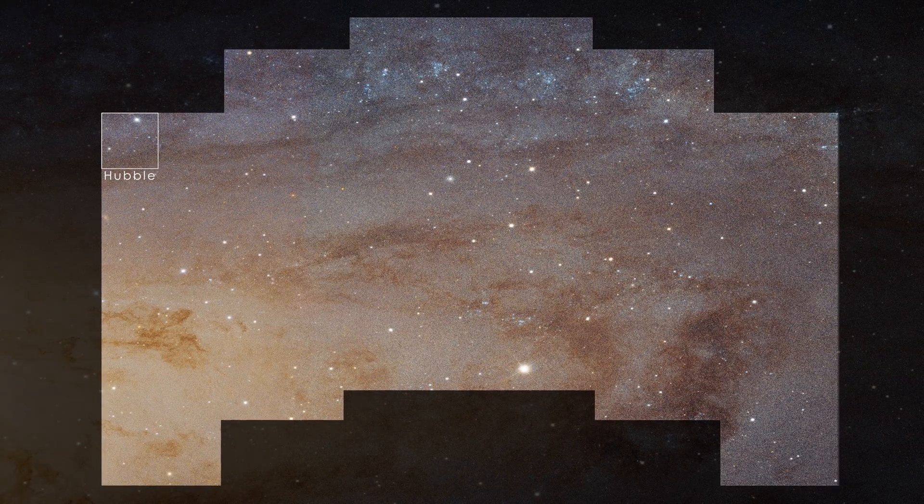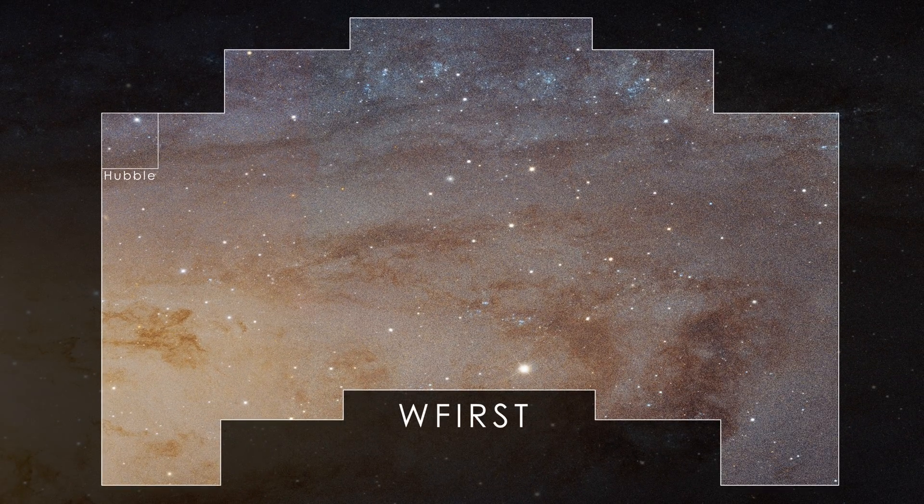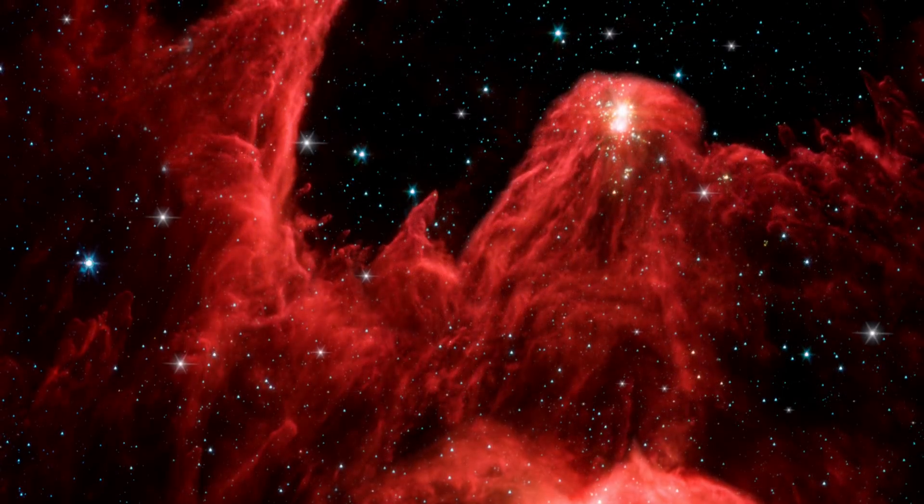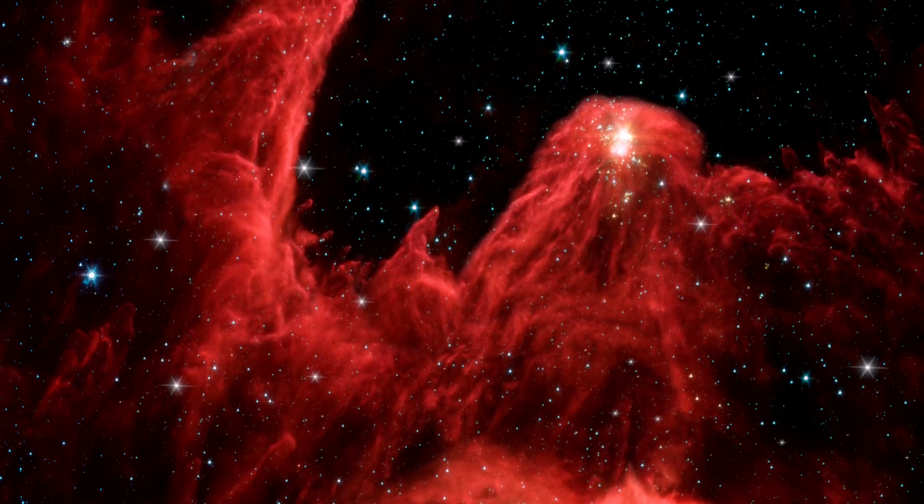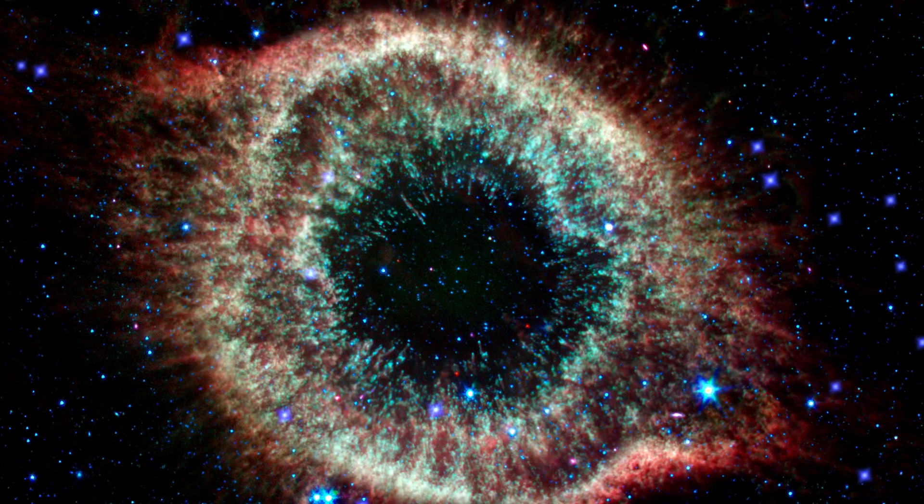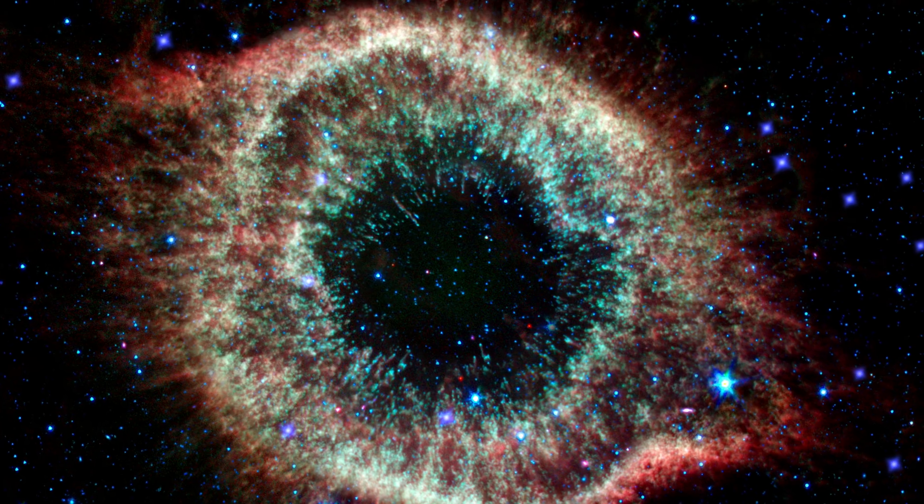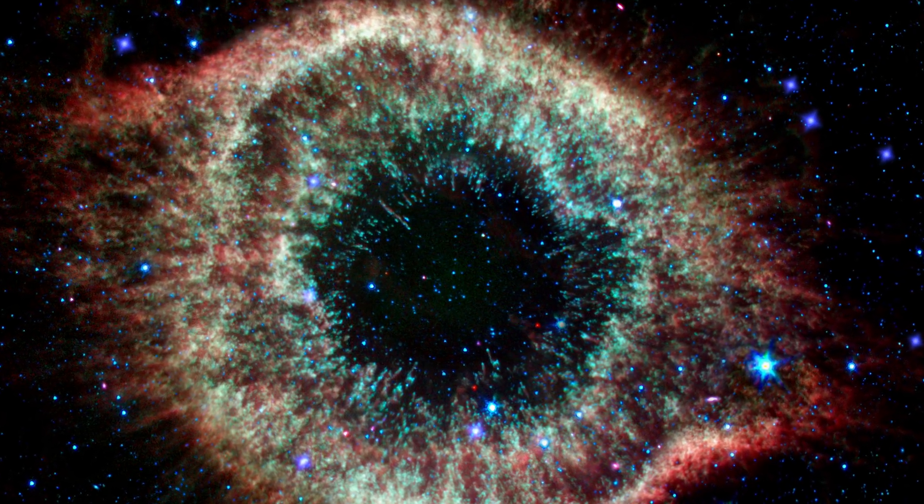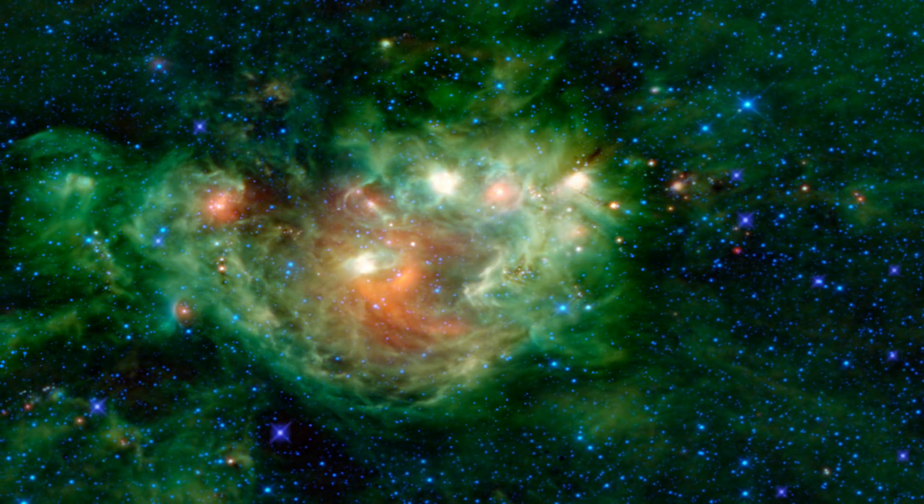Each of the wide field instrument's images will have the depth and clarity of Hubble, but cover a sky area 100 times larger. That's thanks to an arrangement of 18 sensors in the camera to Hubble's one. Viewing the sky in infrared wavelengths allows astronomers to see relatively cool objects like interstellar gas, dust, and exoplanets, as well as stars.